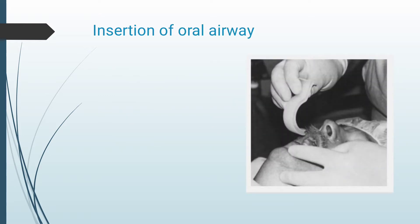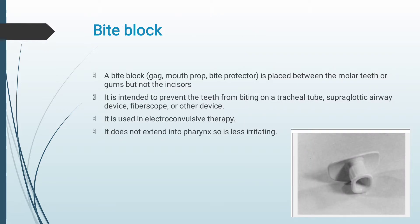The image shows insertion of an oral airway. Moving on to bite block. A bite block, also called as gag, mouth prop, or bite protector, is placed between the molar teeth or gums, but not the incisors. It is intended to prevent the teeth from biting on a tracheal tube, supraglottic airway device, fibroscope, or any other device. It is used in electroconvulsive therapy. It does not extend into the pharynx, so it is less irritating.